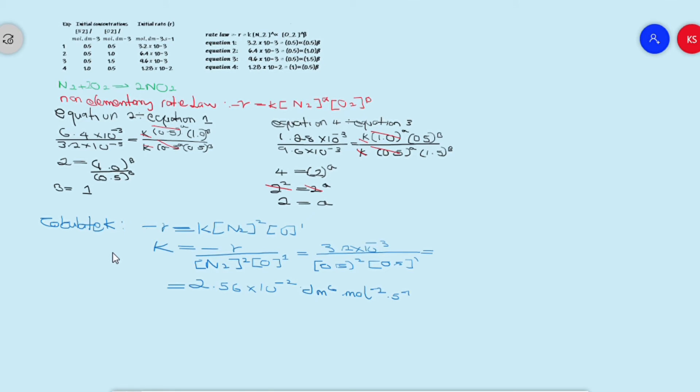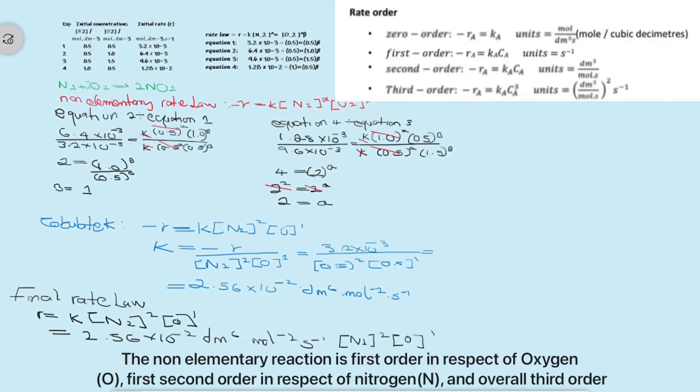The final rate law can be written. To get the units for k, the constant of the rate law, all you have to do is refer to the rate order. If you look at the third order equation, you can see the units, and those are the units that we have to use.